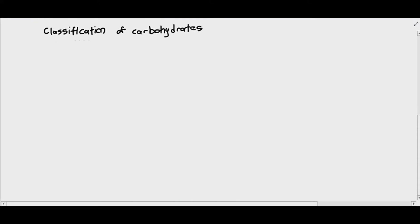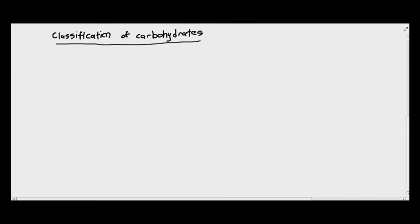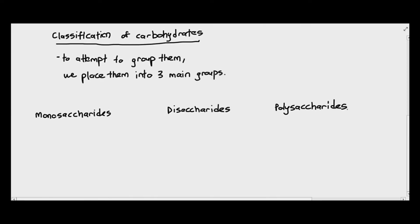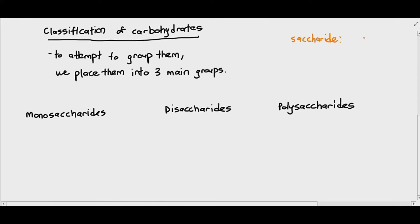So, classification of carbohydrates. To try to attempt to classify these carbohydrates, which are elements made up of carbon, hydrogen, and oxygen, with a ratio of almost always one carbon to two hydrogen to one oxygen, we put them into three main groups. And the three main groups are as follows. Monosaccharides, disaccharides, and polysaccharides. The term saccharide just basically refers to sugar, or sugar molecule. And when you see the word monosaccharide, it just basically means one sugar molecule, disaccharide, two sugar molecules joined together, polysaccharide means many sugar molecules joined together, or a repeating unit of sugar molecules.